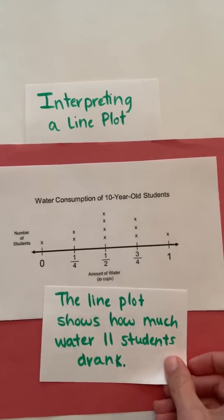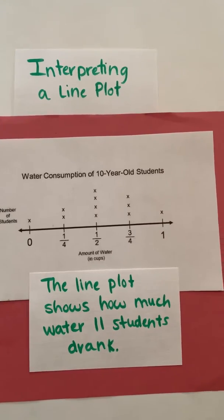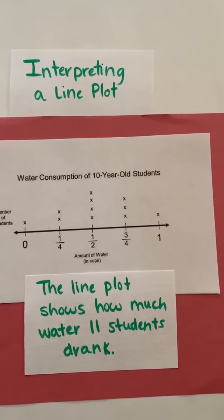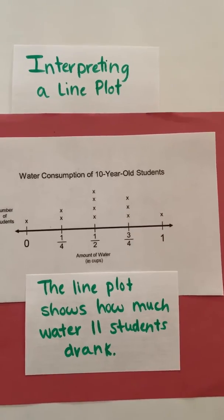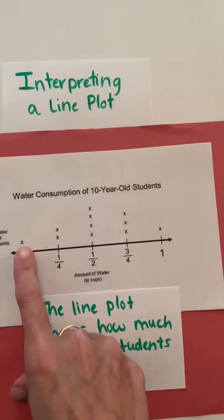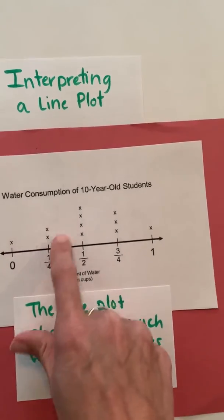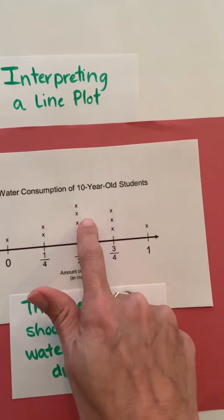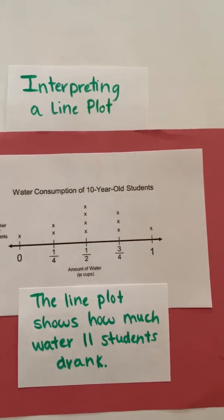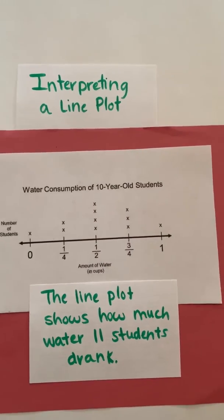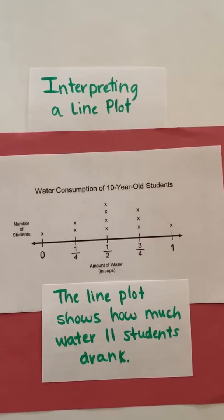First of all, I can see that the line plot shows how much water 11 students drink. I know that because I counted the X's: 1, 2, 3, 4, 5, 6, 7, 8, 9, 10, 11 — so this data represents 11 students.